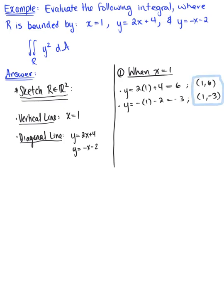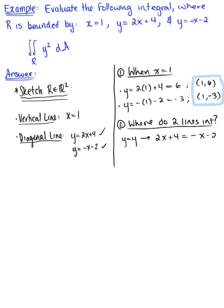The other thing we want to think about is where the two diagonal lines intersect. Since y equals y, we can equate these curves and solve for x. So 2x plus 4 equals minus x minus 2, and solving for x we get positive 3x equals minus 6, so they intersect when x equals negative 2.